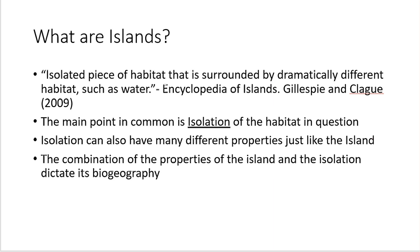That isolation is crucially important. The isolation can have many different properties just like the island. An island can be isolated by a sea of water, or it could be isolated by a sea of sand. We also call the habitat surrounding the island, which isolates it, the matrix. It's the combination of the properties of the island and the properties of the matrix which cause the isolation — which dictates its biogeography, which dictates the life that occurs on it, and whether that life can persist.